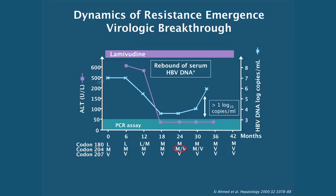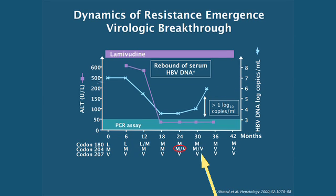Following detection of these genotypic signature resistance mutations in the viral polymerase, the viral load starts to creep up — initially slowly over the next six months, then rapidly accelerating. From month 30 onwards, the 204V becomes the dominant species and there is a rapid rebound of viral DNA. The case definition of greater than one log increase constitutes the case definition for drug failure.